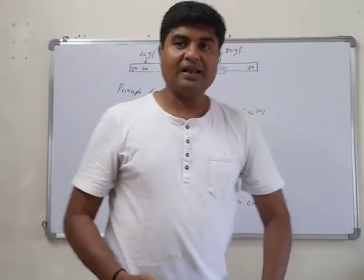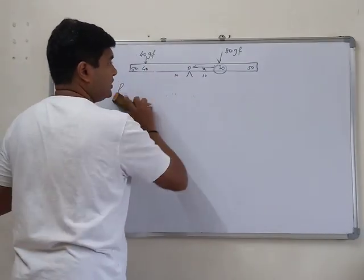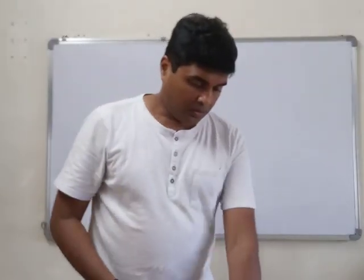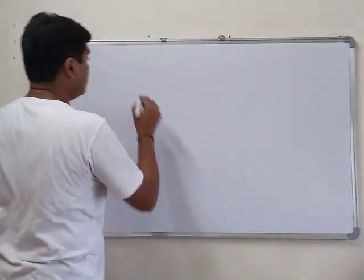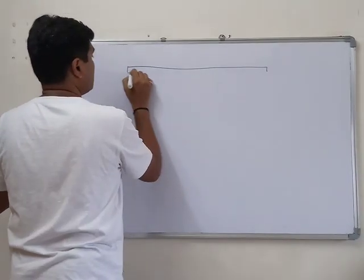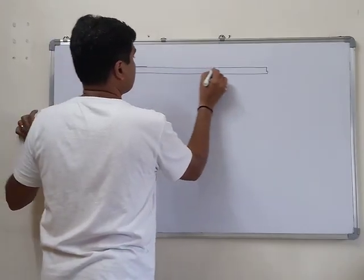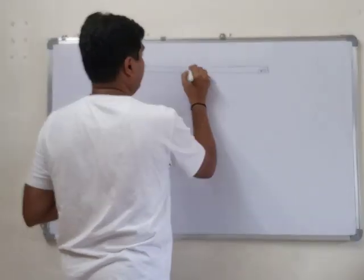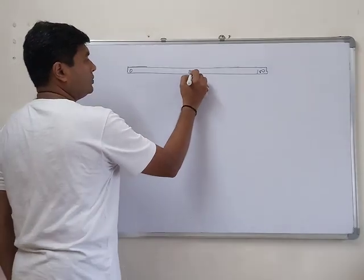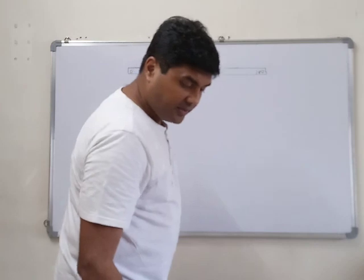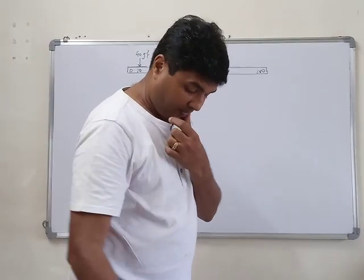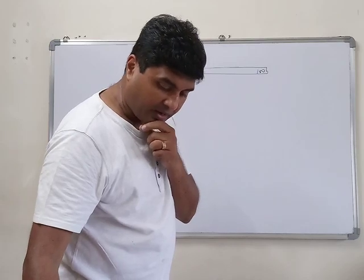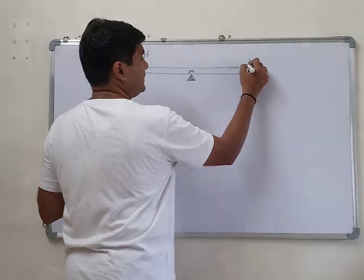That was question 10. Now the last question in this video — question number 11. It is again a meter rule, with markings at 0, 50, and 100. It is pivoted at 50, so the weight of the ruler does not need to be considered.